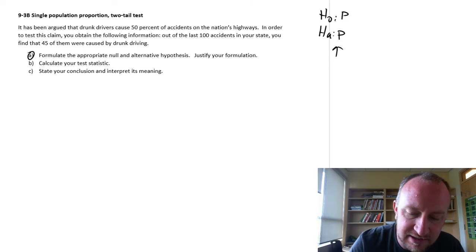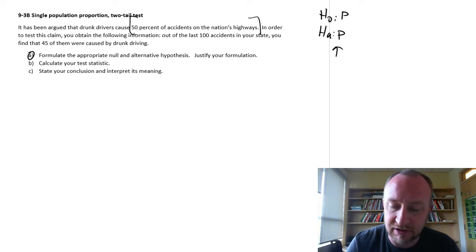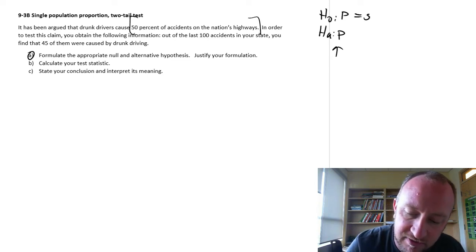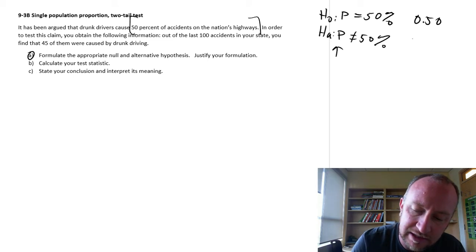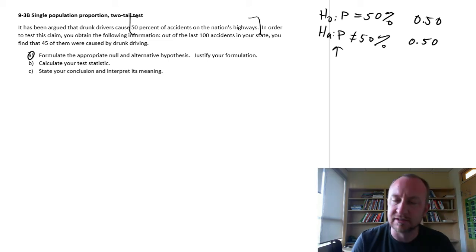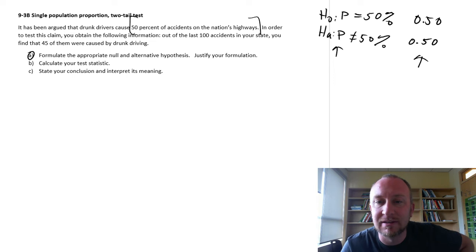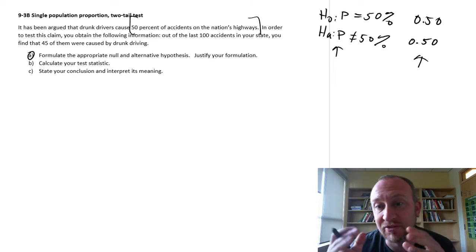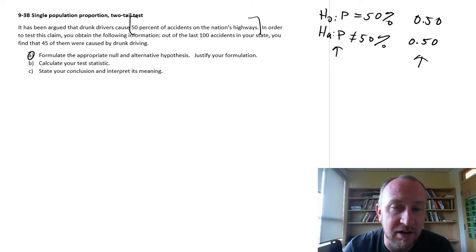And we're testing to see, we're testing this claim that 50% of the accidents are caused by drunk drivers. So this is going to be, is it 50% or is it not 50%? Now you can write it either like this or like this. Either one is perfectly fine. As long as you make sure that when you're doing the calculations, you input the value as 0.5 rather than 50. Because that will certainly cause you problems in your calculations.